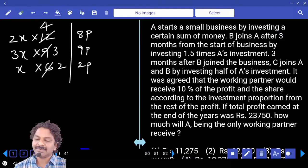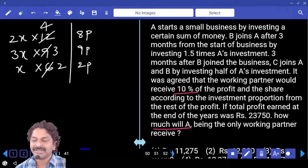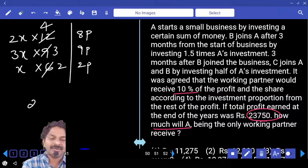Your question is about the share of A. A is working partner and he gets first 10% of the total profit. What is 10% of this? 2375. Clear?